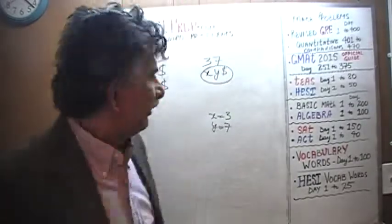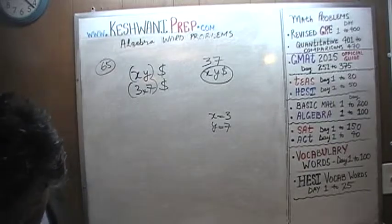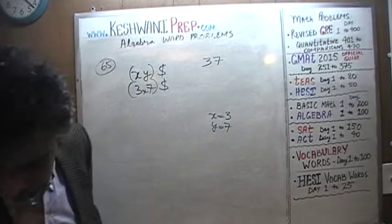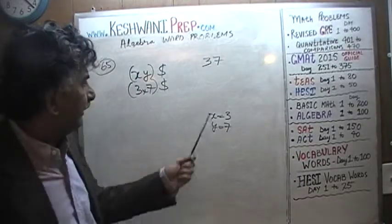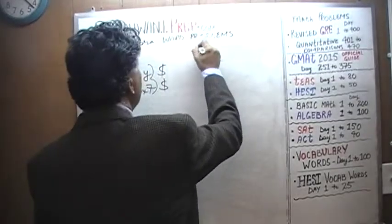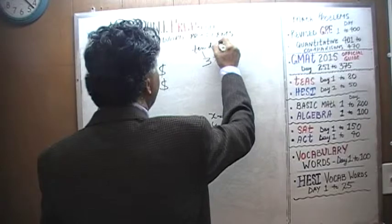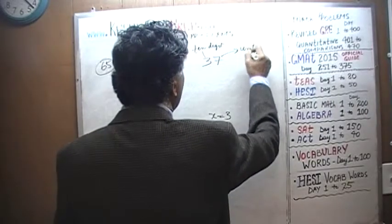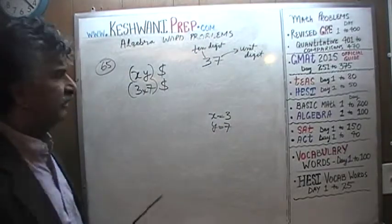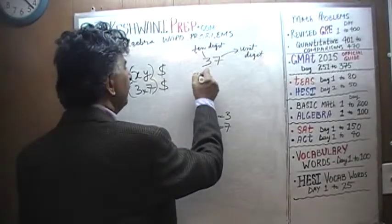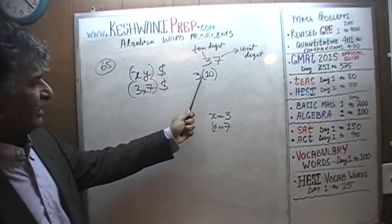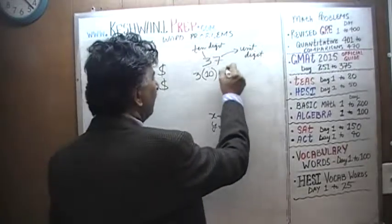That's very simple. What we need to understand is that the 3 you see in 37 is not just a 3 — it's a tens digit. This is the tens digit and this is the units digit. Because it is the tens digit, this 3 is telling you how many tens I have. That's why it's called the tens digit. This 3 tells me I have 3 tens, which is 30, plus 7.